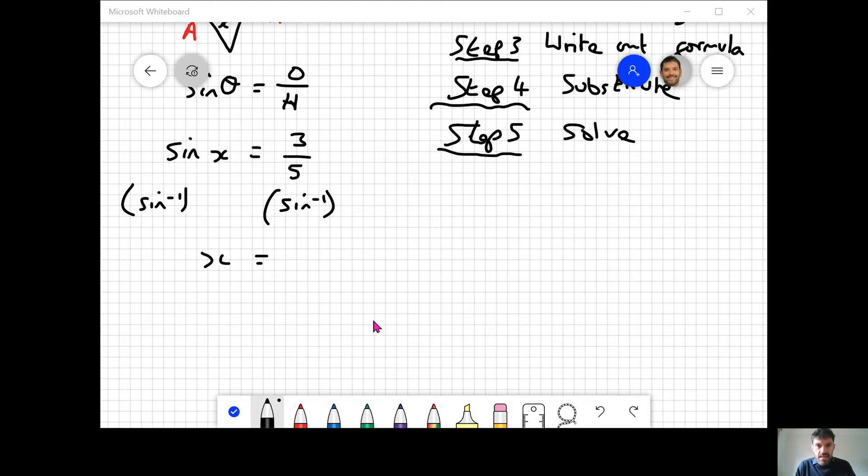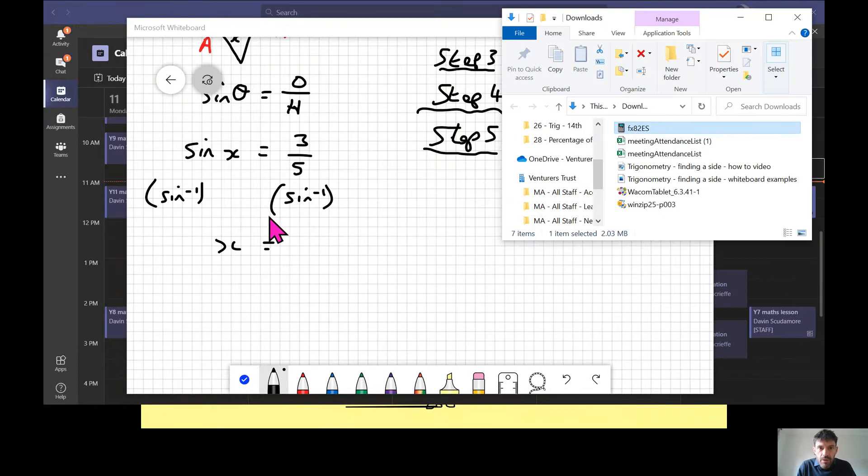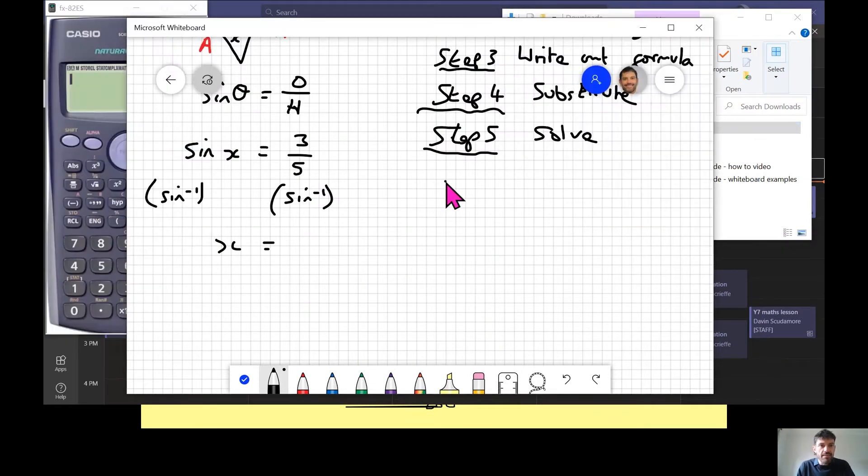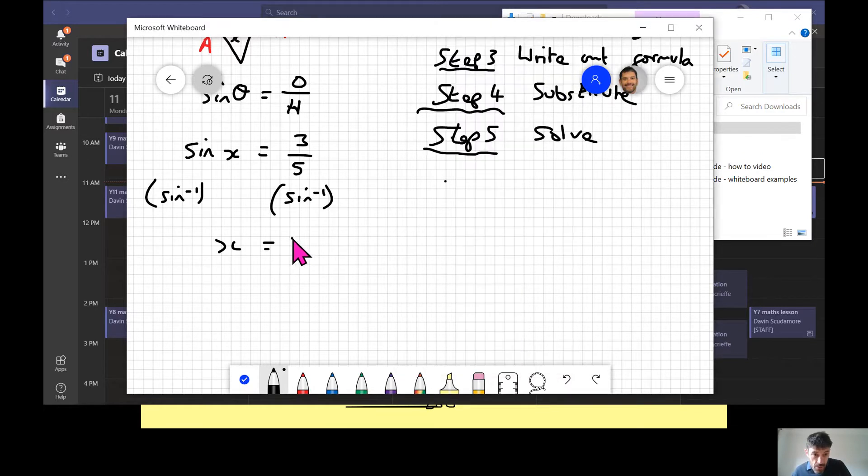I have this jazzy piece of technology. Shift sine automatically gives you a bracket. You could do three divided by five or three over five. I don't think it insists you close the bracket, but it's good habit. That gives us 36.86. Let's round to one decimal place: 36.9 degrees. That's why I only wrote two decimal places, because I knew I was rounding to one dp.